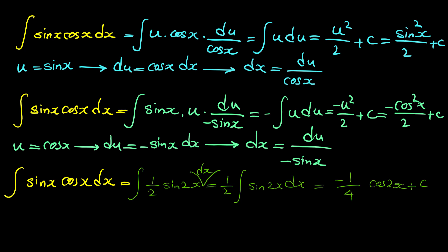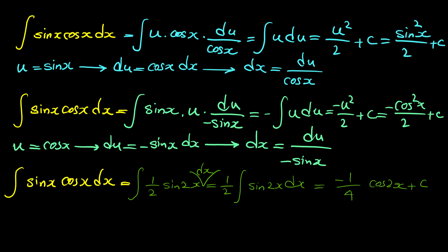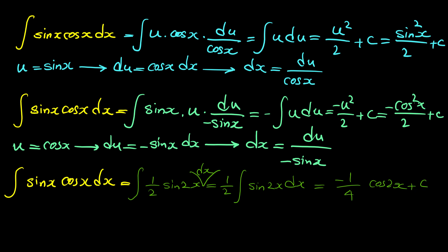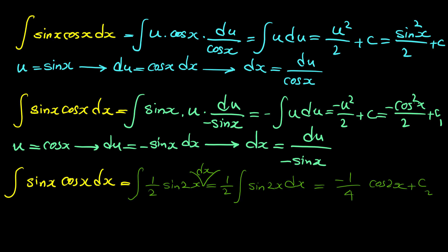I want to prove that negative cosine squared x over 2 plus C1 is the same as sine squared x over 2 plus C2. Note that the constants of integration from different methods are not necessarily equal — they could be different numbers — so I'll label them C1 and C2.